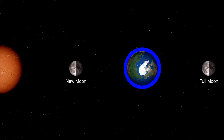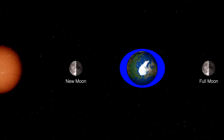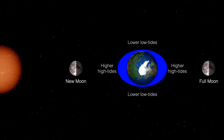At new and full moon, the alignments are like you see here. The sun, moon, and earth are all along a straight line, and the sun and moon pull together along that same line. By the way, this alignment has a wonderful name: it's called a syzygy. So the moon's effect is to stretch the waters, and the sun, pulling along the same line, enhances the pull of the moon, stretching the waters of the ocean even more. This creates higher high tides and lower low tides at new and full moon. These are called spring tides — and this has nothing to do with the season spring, but rather because the water springs up towards the moon.